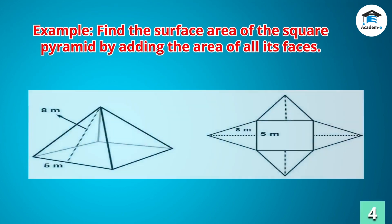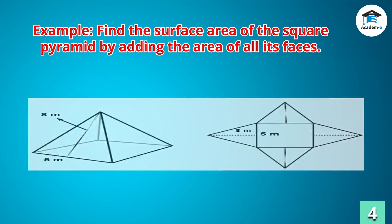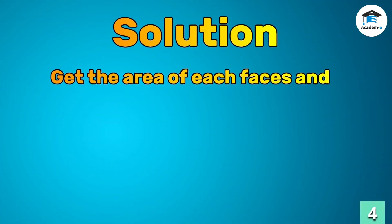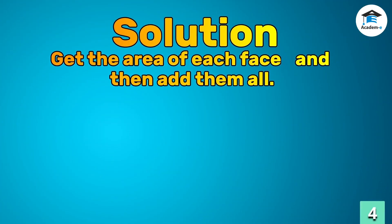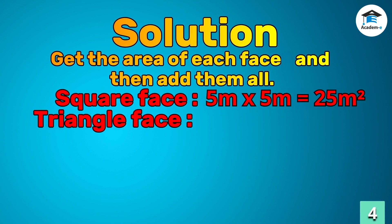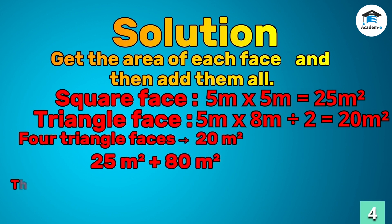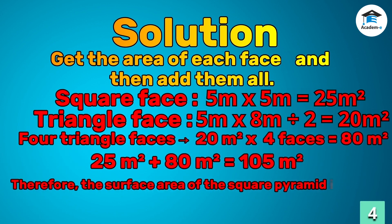Find the surface area of the square pyramid by adding the area of all its faces. Get the area of each face and then add them all. The area of the square base is 25 square meters. The area of one triangular face is 20 square meters, and since there are four triangular faces, multiply it by four, giving 80 square meters. Therefore, the surface area of the square pyramid is 105 square meters.